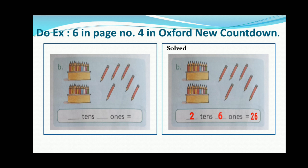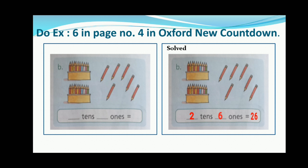How many tens are there? As you can see, there are 2 groups of color pencil boxes — that is 20, so it has 2 tens. Now count the separated pencils: they are 6, so write 6 in ones. Now add 2 tens and 6 ones and it will be equal to 26. Now do all the parts with the same method.